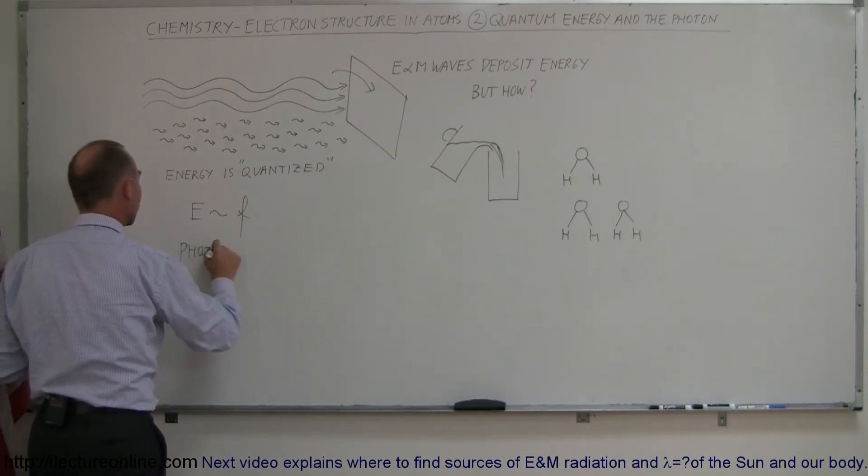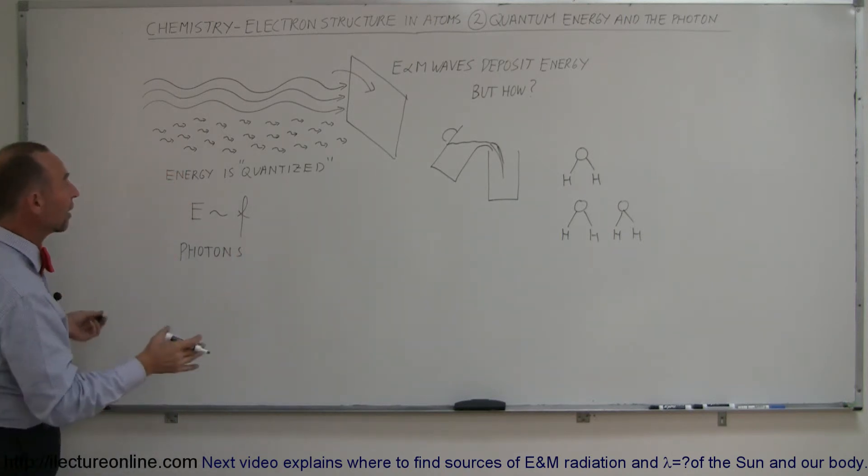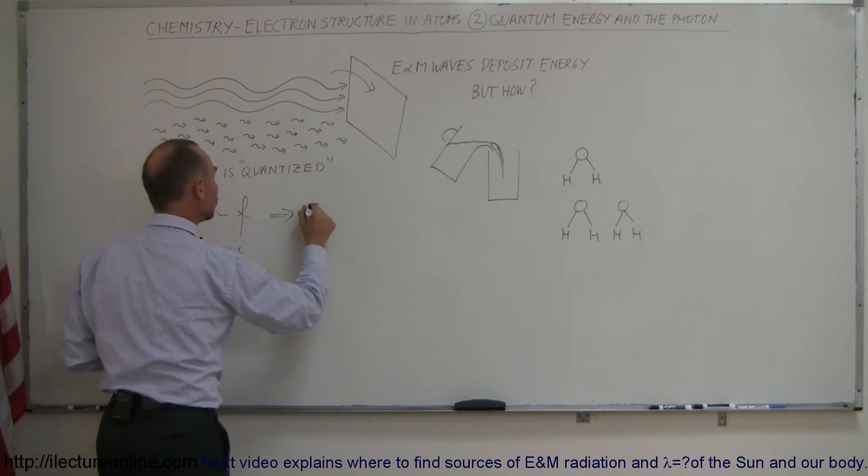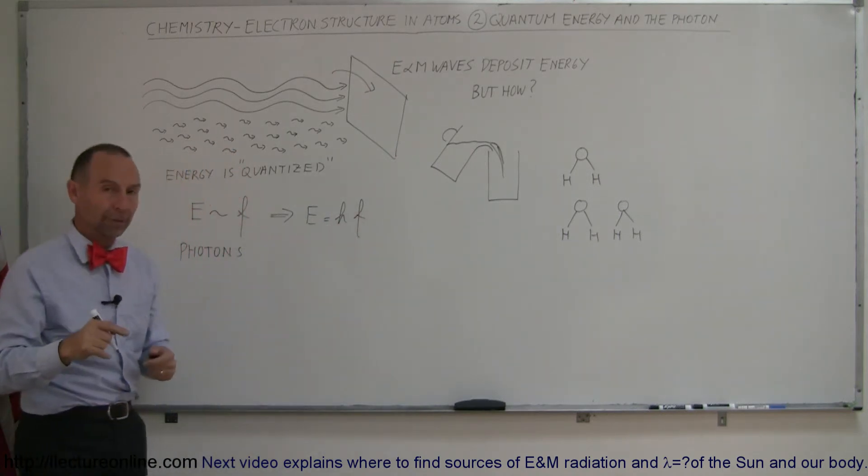So a photon is simply a little chunk of energy. It could be visible light, it could be infrared radiation, it could be ultraviolet radiation, just a little chunk of that energy. Eventually they turned this into an equation. They said that energy of a chunk, like a photon, is equal to H times the frequency, where H is now named Planck's constant.